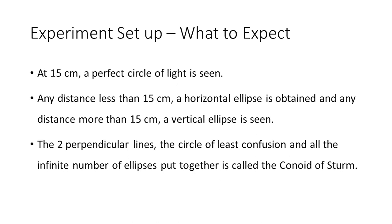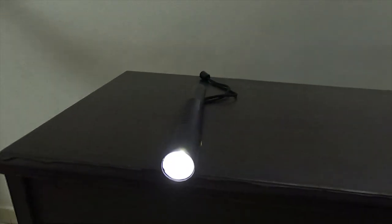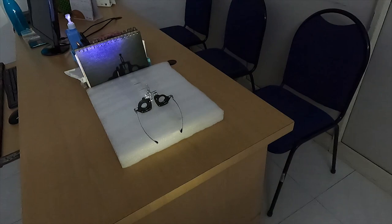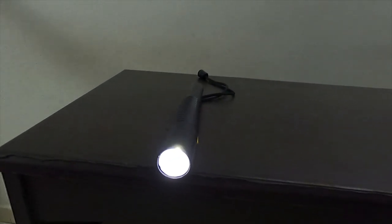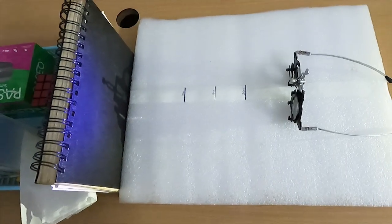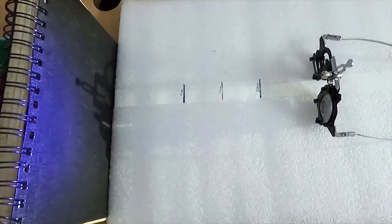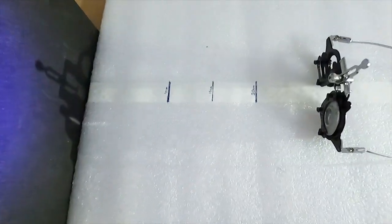Let us now take a look at the experiment itself. This is the experimental setup. This is the torch as a light source. That's the trial frame and the book which is acting as a screen. These are the markings at 10, 15 and 20 centimeters.